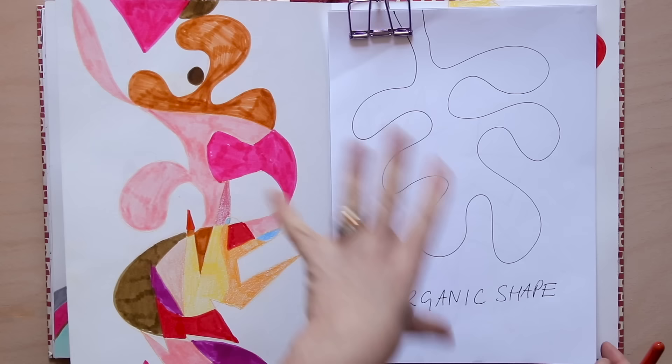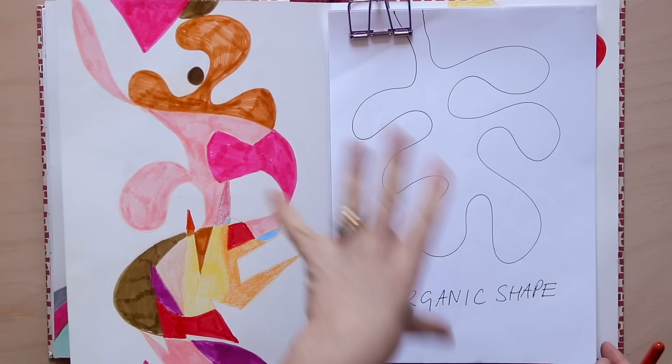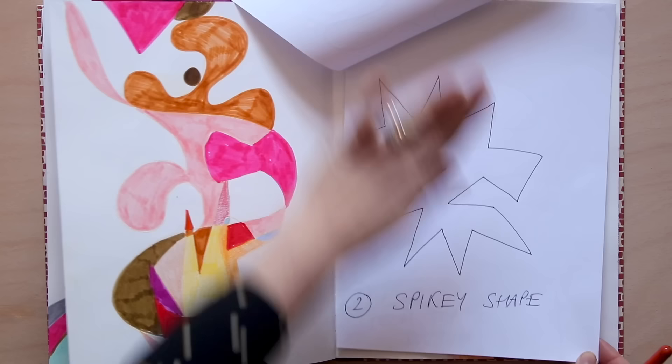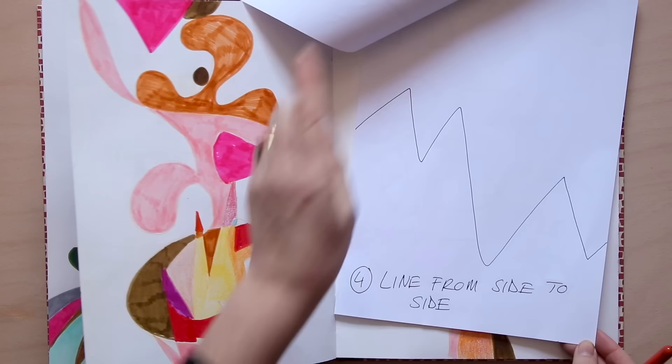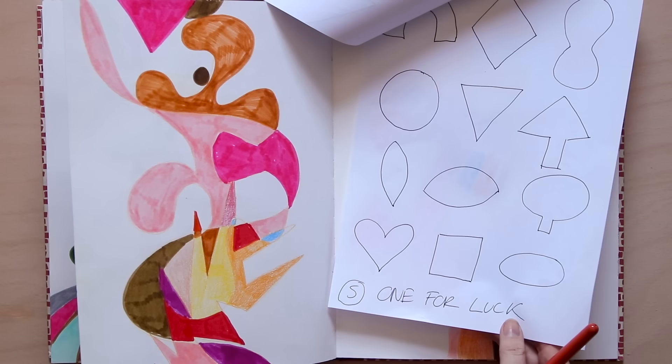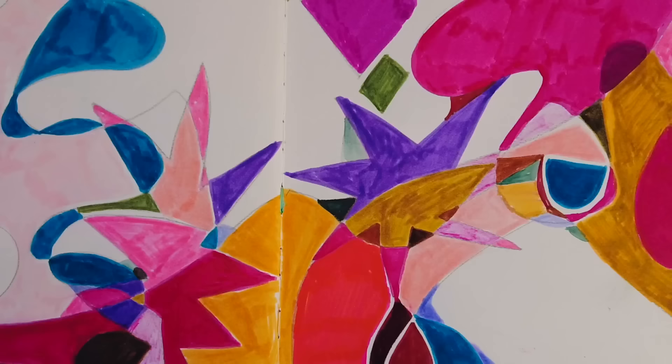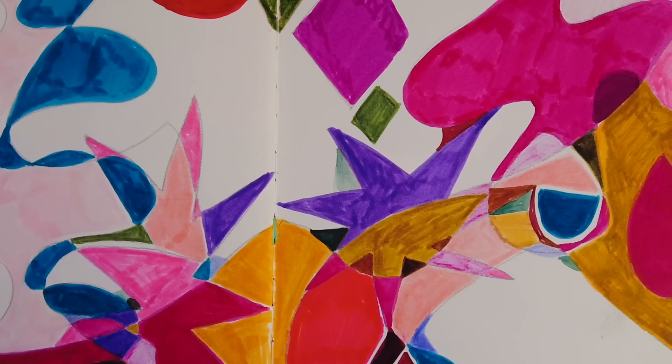I started by drawing a big organic shape. And then right on top of that, I drew a spiky shape. And then I added a few lines. So one line coming from the top to the bottom, one line coming from the side to side. And then I added one extra random shape for luck into the composition to try and create something pleasing. So let's get a piece of paper and I'll just show you how I did this.